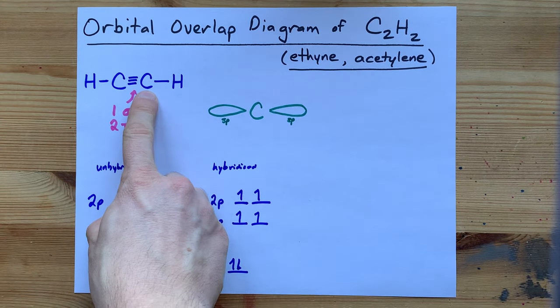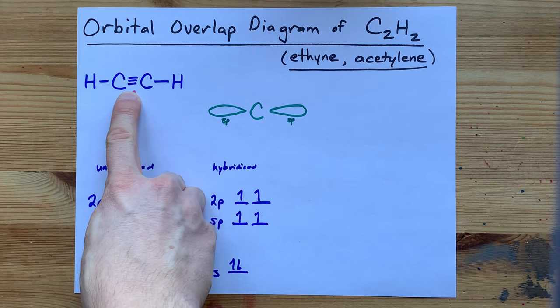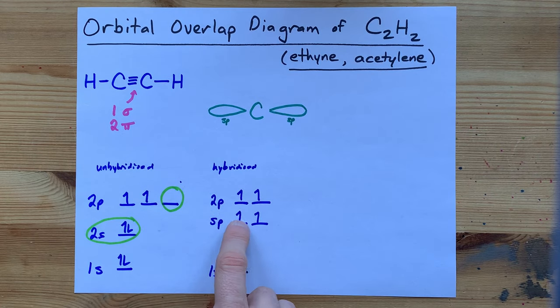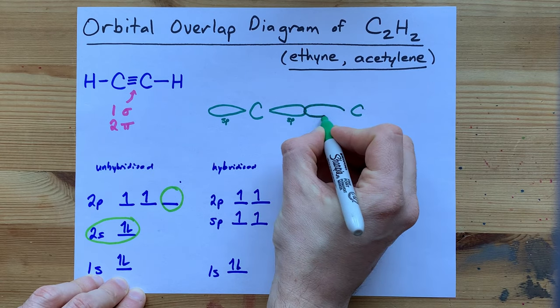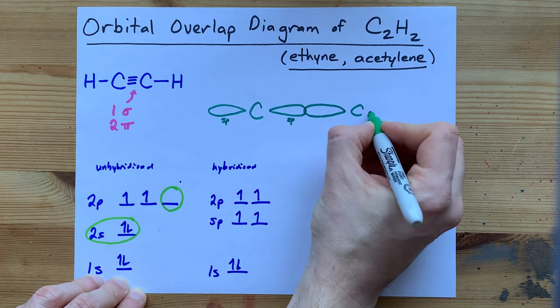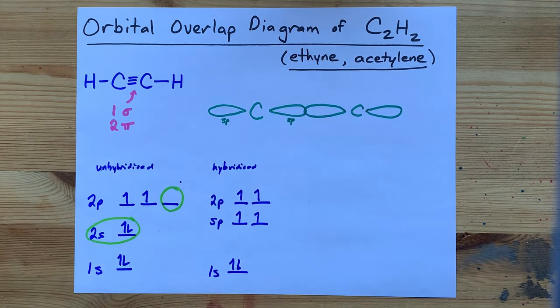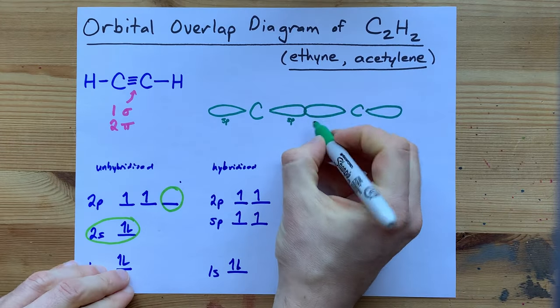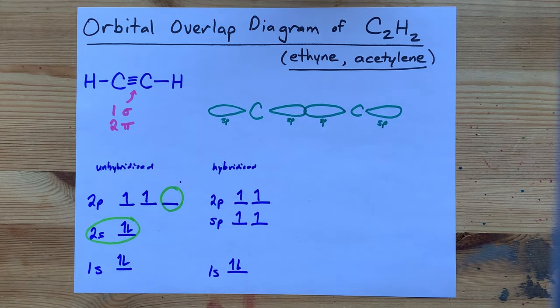Now the other carbon also has one sigma and two pi bonds here. Now officially it has another sigma bond here, but that's what the other sp orbital is going to be for. That's going to be this carbon. I'm going to try to get it to overlap just a little bit with that sp. I probably could have done with a little more overlap there actually. Just trying to configure it the same way. This is another sp orbital, and that's another sp orbital.